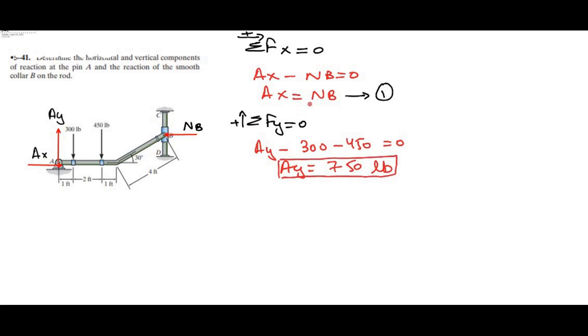Now we have three unknown variables in total: AX, AY, and NB. But we had only two equations, so we need one more equation.